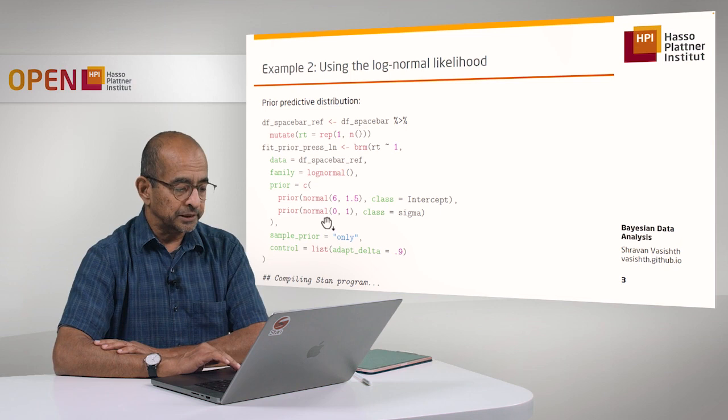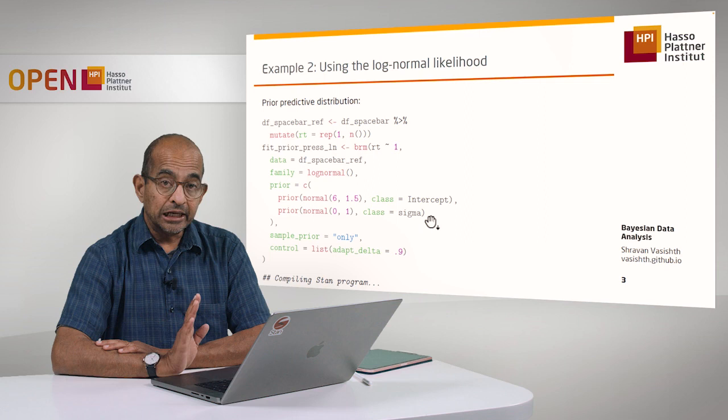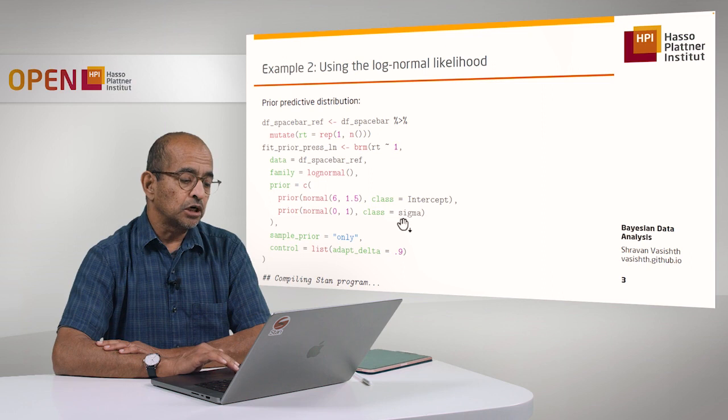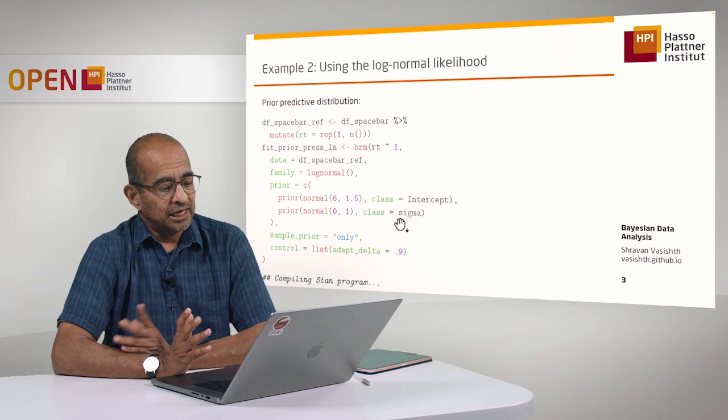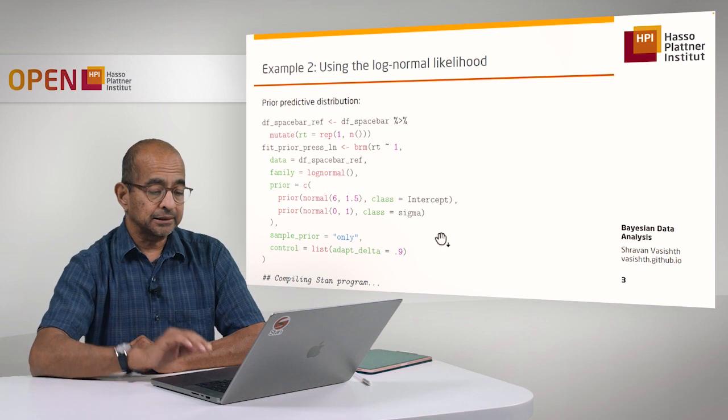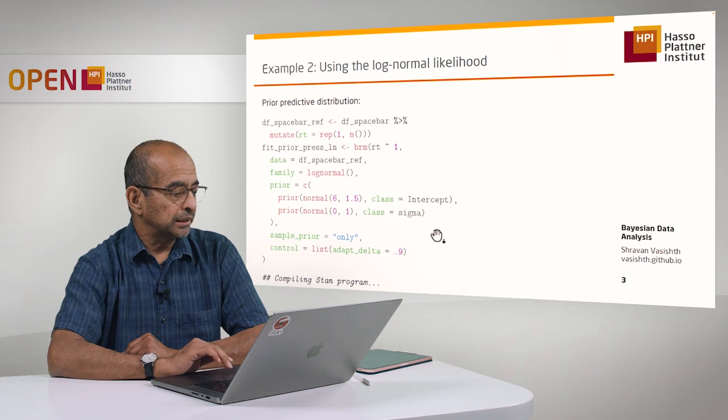We are specifying—this is very important—a normal 0, 1 prior, mean 0 standard deviation 1, for the sigma parameter. But notice that I don't write anything here about truncation. I don't need to. One of the beauties of the BRMS package is that it just takes care of the fact that it knows sigma cannot have a negative value, and so it truncates this prior for you internally. If you were writing pure Stan code, which you would do if you're doing more advanced Bayesian modeling, you would have to pay attention to the prior specifications. But here BRMS takes care of this for you.